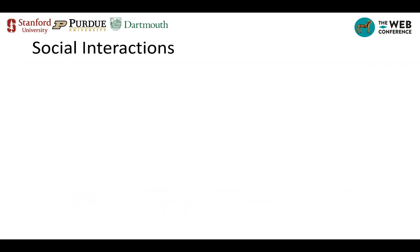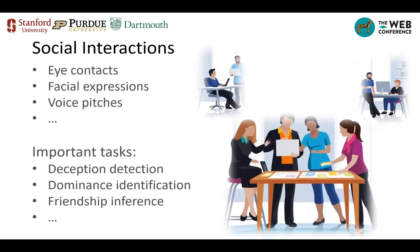Social interactions are common in our daily lives. When two or more people interact with each other, the patterns of their communication behaviors — which are usually combinations of eye contact, speaking, listening, head poses, voice pitches, and mouth opening — all carry important clues that are indicative of their social status or relationships.